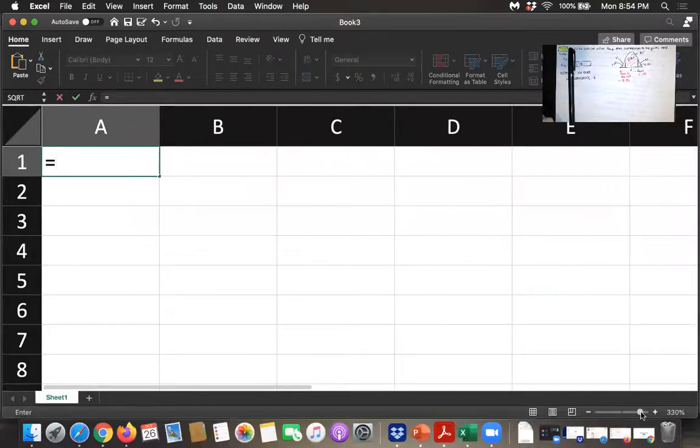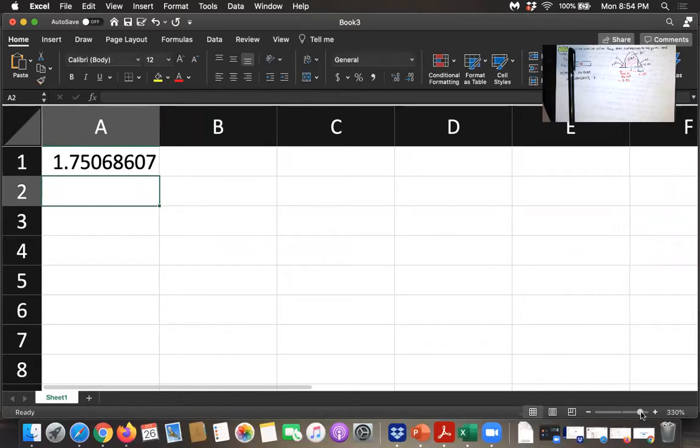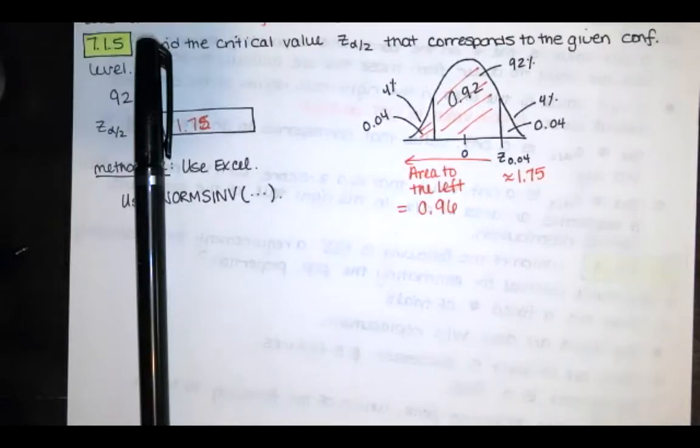So I go to equals N-O-R-M-S-I-N-V, and the area to the left is 0.96, close parentheses, and we get that. So we get z equals 1.75 again, which is exactly the same value that we found using our table.